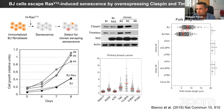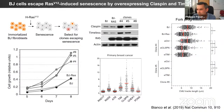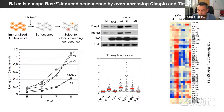The speed of the replication fork is reduced when the oncogene RAS is induced — a direct visualization of replication stress as a reduction in fork speed. In the escape clones, the replication fork slowdown is bypassed because they over-express claspin and timeless. If we deplete claspin and/or timeless in these cells, the slow fork phenotype associated with replication stress is restored.